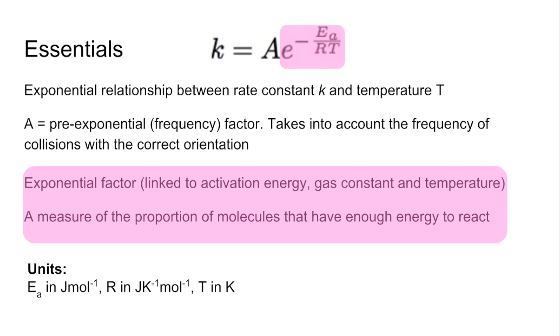The gas constant R has joules per kelvin per mole, so you can see there's joules in the gas constant. That's why we have the activation energy in joules as well. And obviously the temperature needs to be in kelvin, because we've got kelvin in the gas constant units.